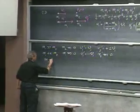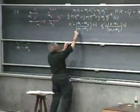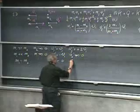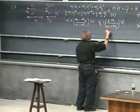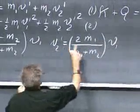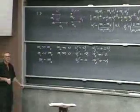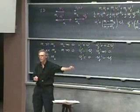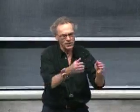Now we have a very cute case: M1 equals M2. When you substitute that in, V1 prime becomes zero — the first one stops. But V2 prime becomes V1. If M1 equals M2, you have two downstairs and two upstairs, and V2 prime equals V1. You've all played with Newton's cradle: two billiard balls, one is still, the other bangs on it. The first one stops and the second takes off with the speed of the first. An amazing thing.